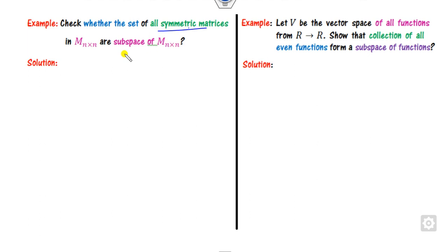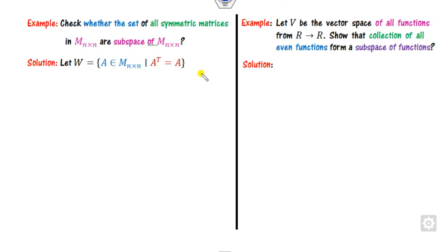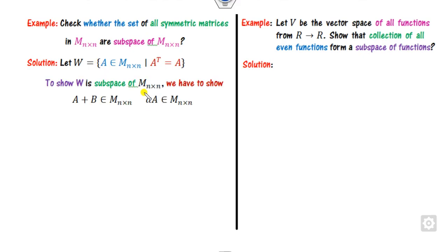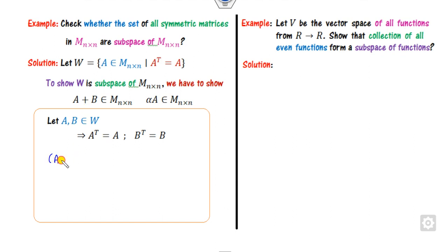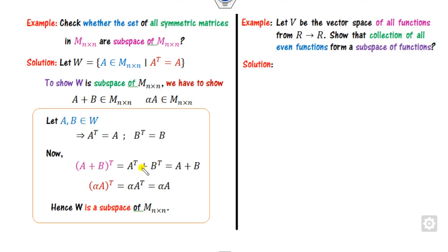Consider W = all symmetric matrices from M_{n×n}, where A is symmetric means A^T = A. Take A, B ∈ W so that A^T = A and B^T = B. Then (A+B)^T = A^T + B^T = A + B, so A+B ∈ W. For scalar multiplication, (alpha*A)^T = alpha*A^T = alpha*A, so alpha*A ∈ W. Both properties are satisfied — W is a subspace.